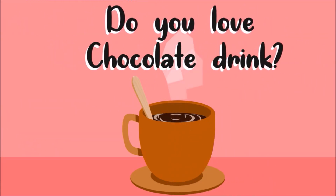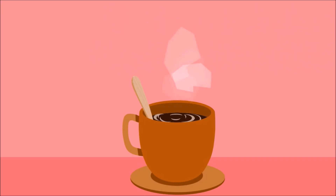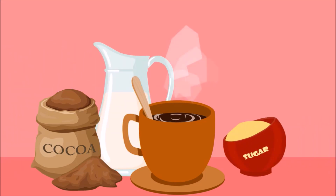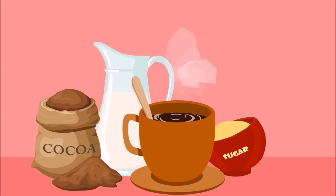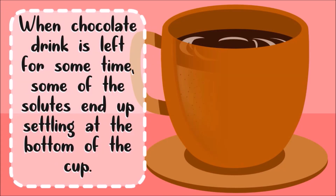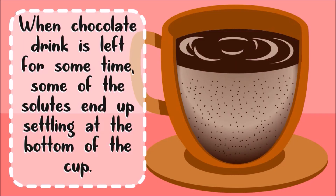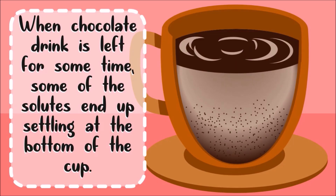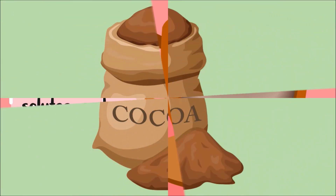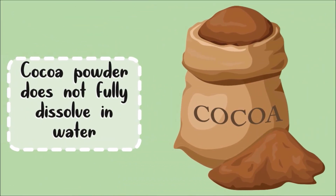Do you love chocolate drink? A chocolate drink is made up of cocoa powder, milk, and sweetener dissolved in water. However, when chocolate drink is left for some time, some of the solutes end up settling at the bottom of the glass. This is because cocoa powder does not really fully dissolve in water.